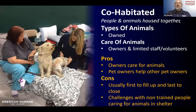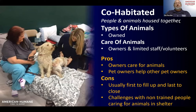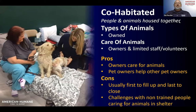The pros are the owners are providing all the care for the animals, which reduces stress for both animals and people. It's probably the quietest type of shelter too — you often don't hear barking or whining because the animals are there with their people. The people feel needed during a disaster, which is important. One of the challenges is these shelters are usually the first to fill up and the last to close.